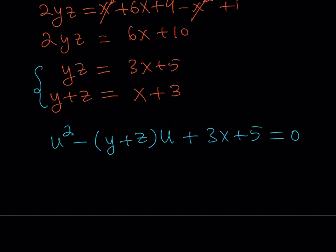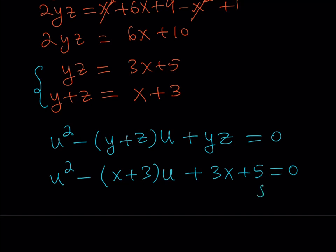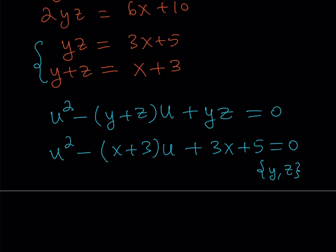Now let's make the substitutions. Since y plus z equals x plus 3, and yz equals 3x plus 5, we replace those in the equation. This gives us a quadratic in u, whose roots are y and z. Since we know the solutions are y and z, if we solve it, we're going to get something nice.